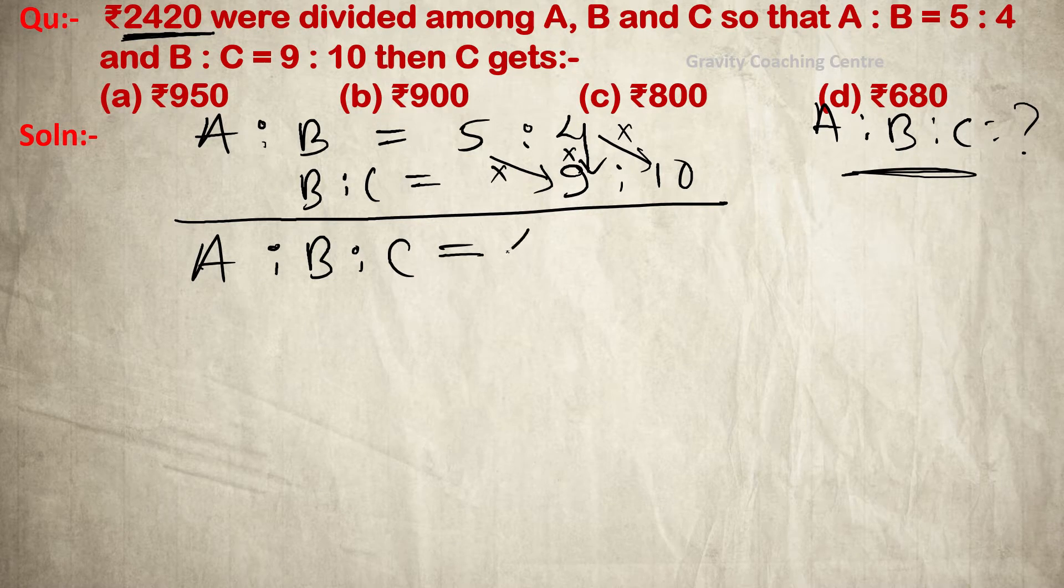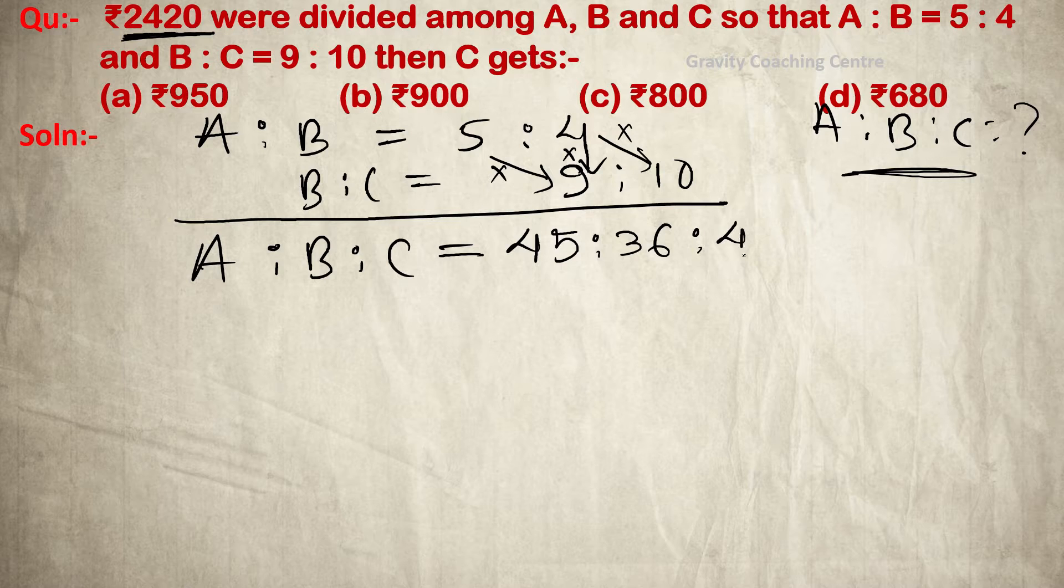So 5×9 = 45, 4×9 = 36, and 4×10 = 40. Now we need to find C's share, so therefore...